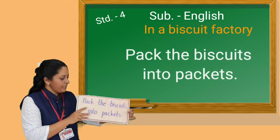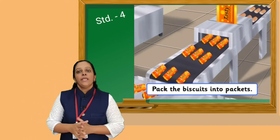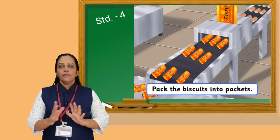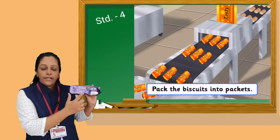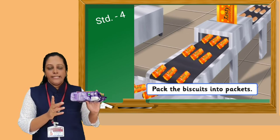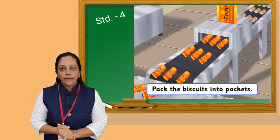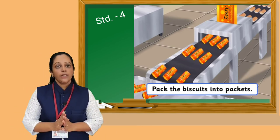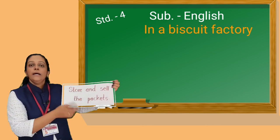And then our next step is: Pack the biscuits into packets. Now it's packing time. In packing, we have to decide the design of packing first. Packing also allows for the display of information regarding the type, weight, contents, manufacture of the product, expiry date of the product, etc. And we must check the expiry date while buying food packets. After that, the biscuits are packed into colorful packets, and after that they are stored and sold.